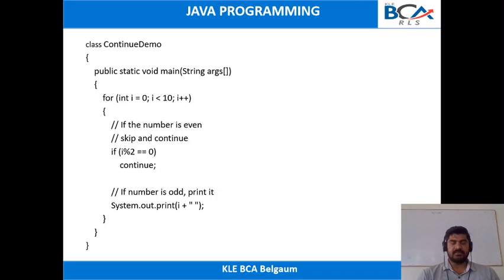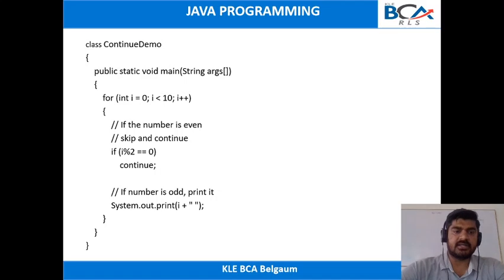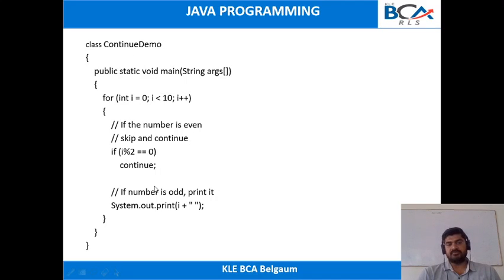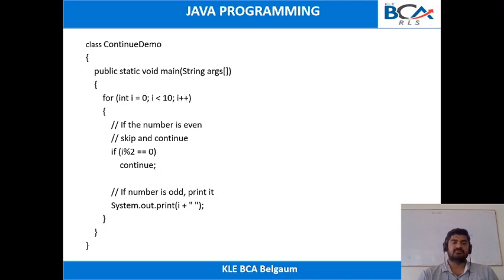Next we will see a simple program for the continue statement. Whenever you include the continue statement, it will again start the execution of the next iteration. In this program, we are checking whether the given number is even or odd. If the number is even, we are not printing that value — we will continue with the next iteration.